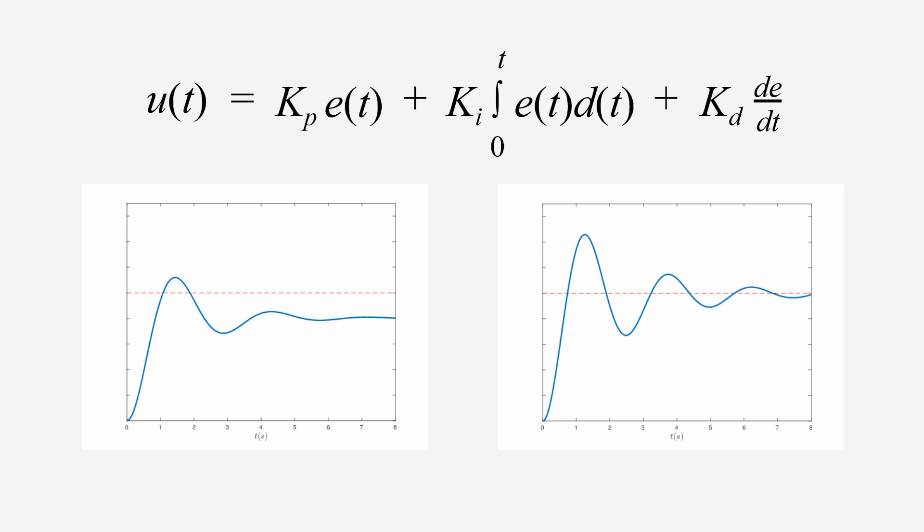Again, this is a calculus concept, but it's a little easier to grasp than integrals. The derivative is essentially the rate of change of a function. So, in the context of PID, the derivative is basically the rate at which the error is changing.